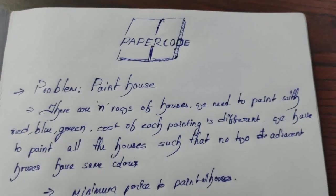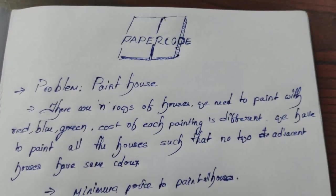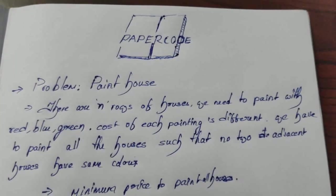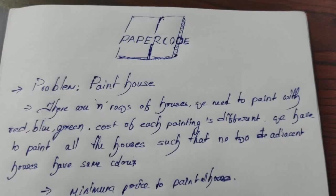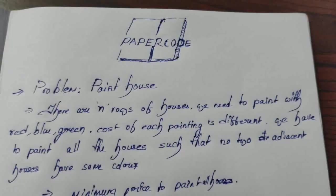Let's go to the problem statement. There are n rows of houses we need to paint with red, blue, or green. Cost of each painting is different. We have to paint all the houses such that no two adjacent houses have the same color. Ultimately we need to find out the minimum price to paint all the houses.